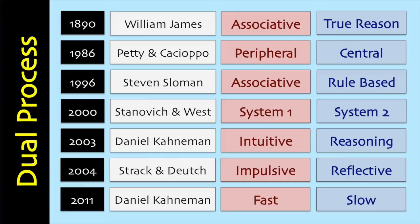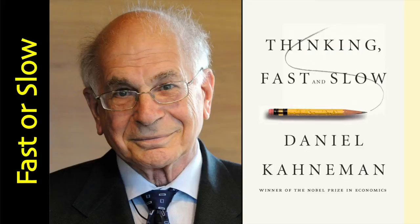In 1986, Richard Petty and John Cacioppo divided thinking into central and peripheral routes. Central requires active thinking where motivation and ability are high, while the peripheral route is taken when careful thought is not required and shortcuts can be used. In 1996, Stephen Slomans said that stimuli are categorized and processed differently based on the regularity of events. Keith Stanovich and Richard West coined the concept of two-system thinking in 2000. In 2004, Fritz Strach and Roland Deutsch identified the reflective and the impulsive system. Daniel Kahneman, winner of the Nobel Prize for Economics in 2002, popularized the dual process theories in his 2011 book Thinking Fast and Slow.